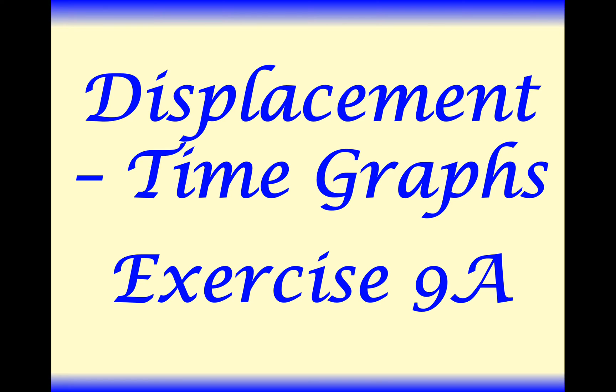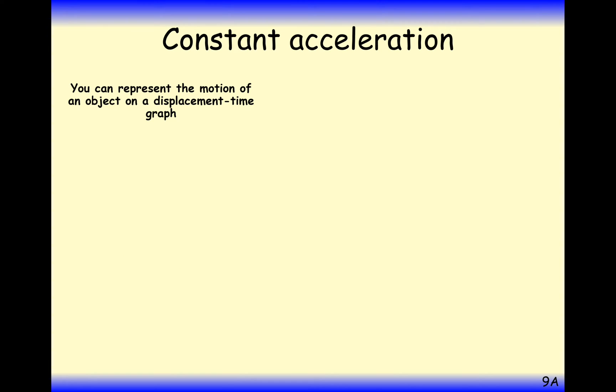Hello there and welcome to the series of videos going through the content of A-level maths. Here we're looking at displacement time graphs from exercise 9a. Displacement means the change in position relative to its starting point. So if it's gone forward and then come back, its displacement is only the difference between where it started and where it finished. And it could be negative as well if you're going in the opposite direction to the way that positive is set.